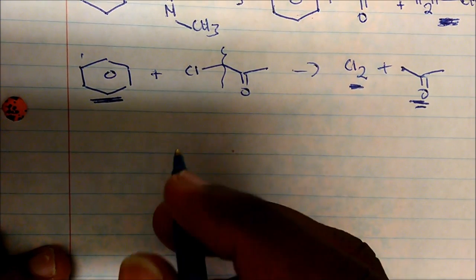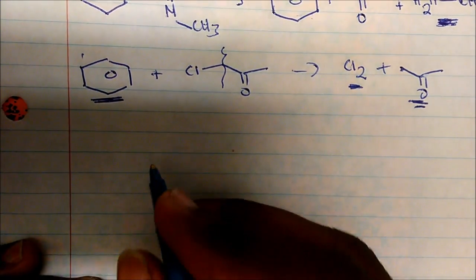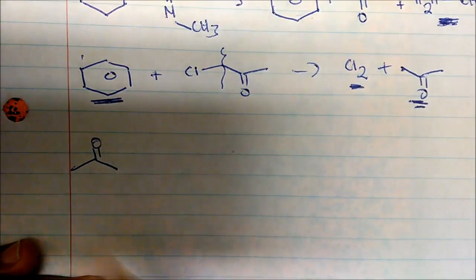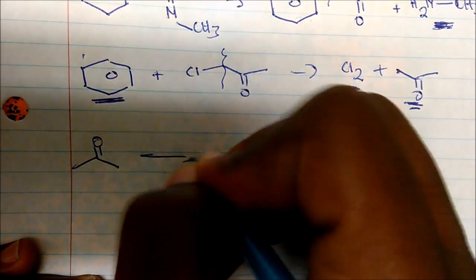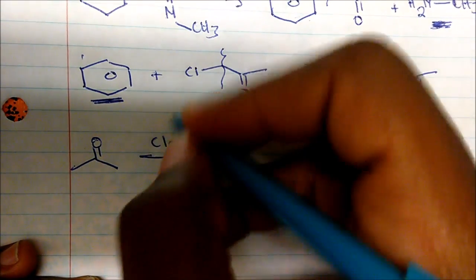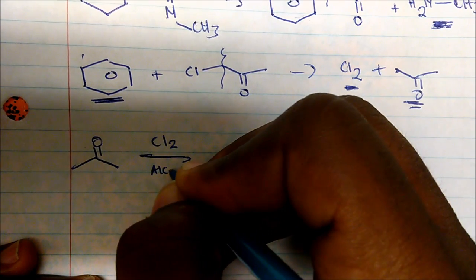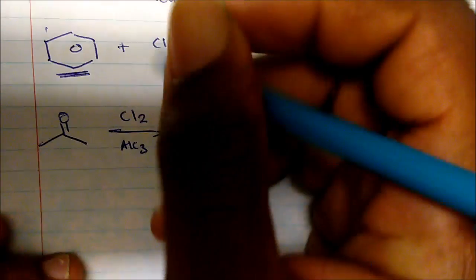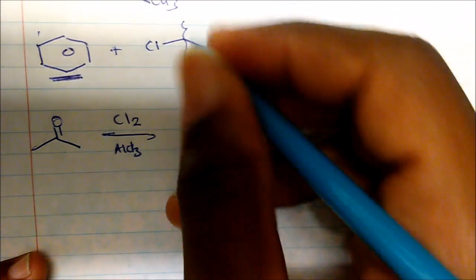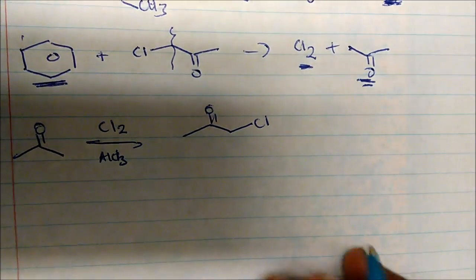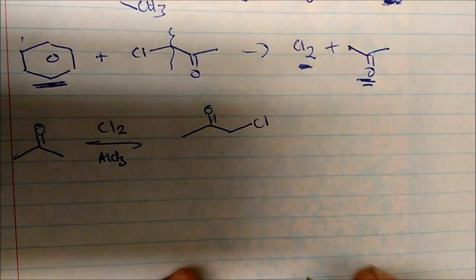So let's run through the synthesis. So if I take acetone, and we know where to get that, and we add chlorine in some sort of Lewis acid. So in this case, I'm going to use aluminum trichloride. We create alpha chloroacetone.